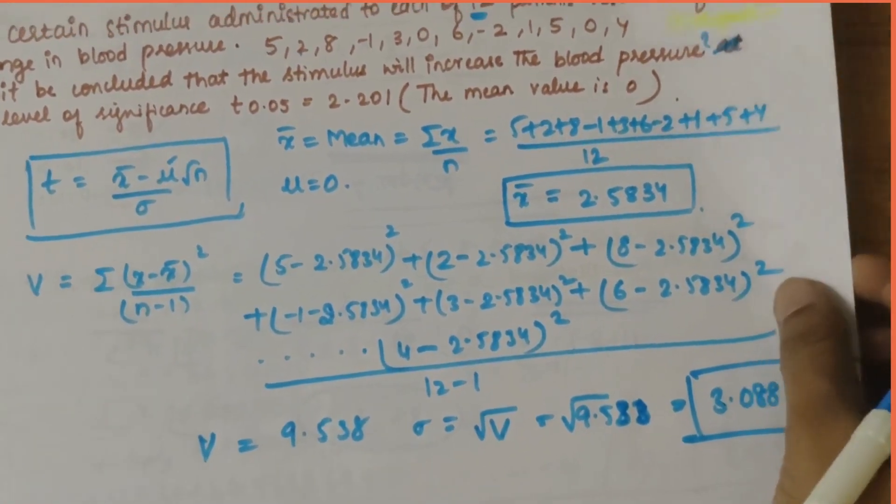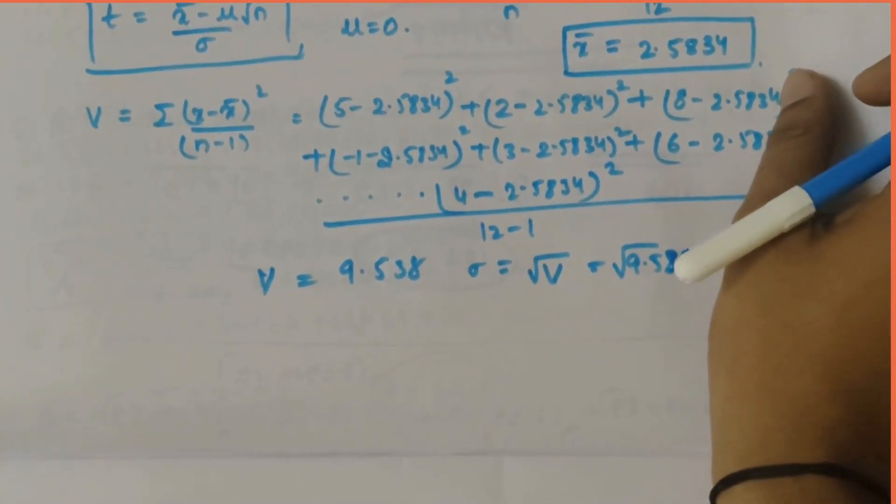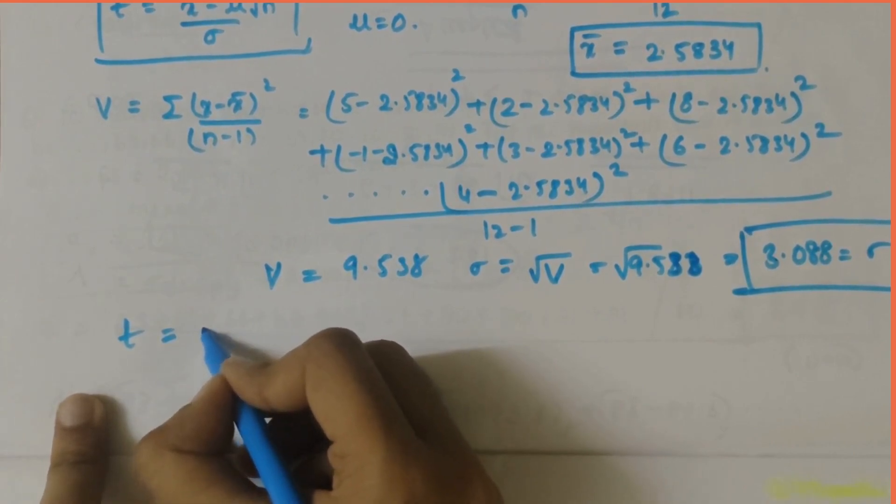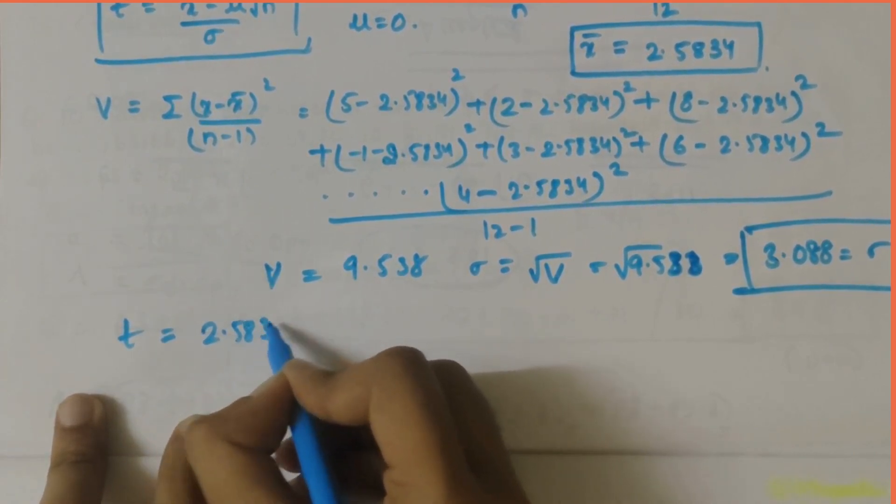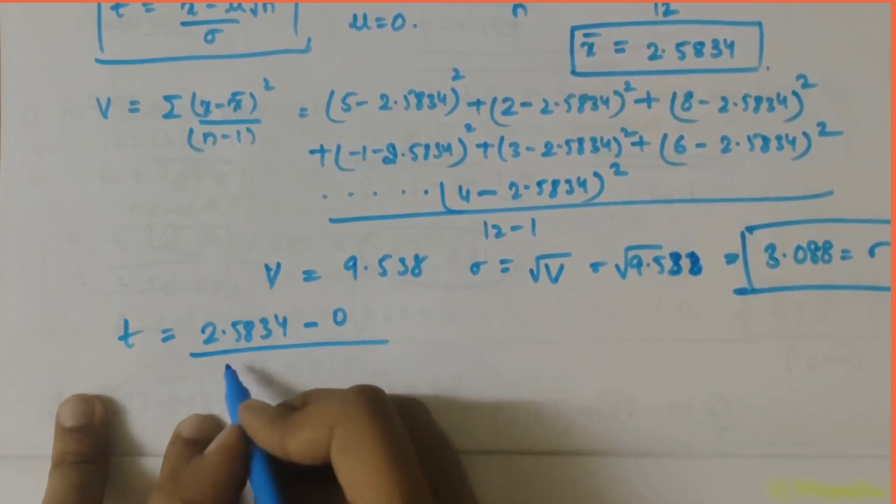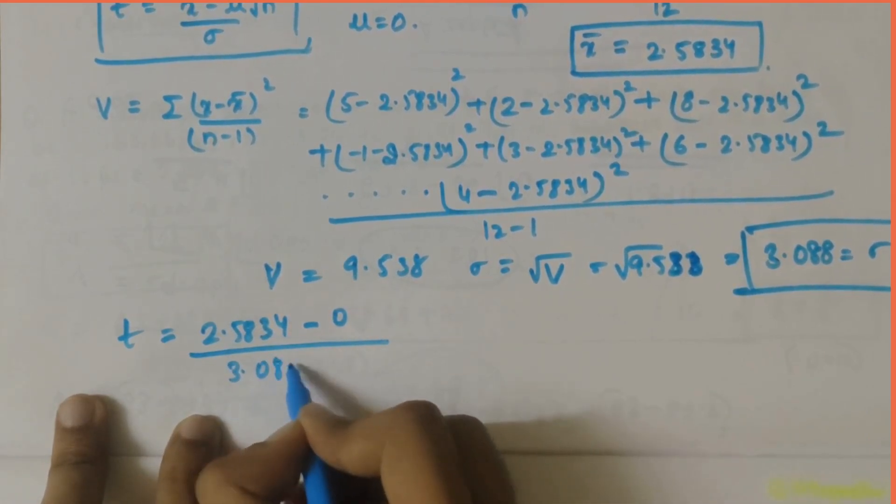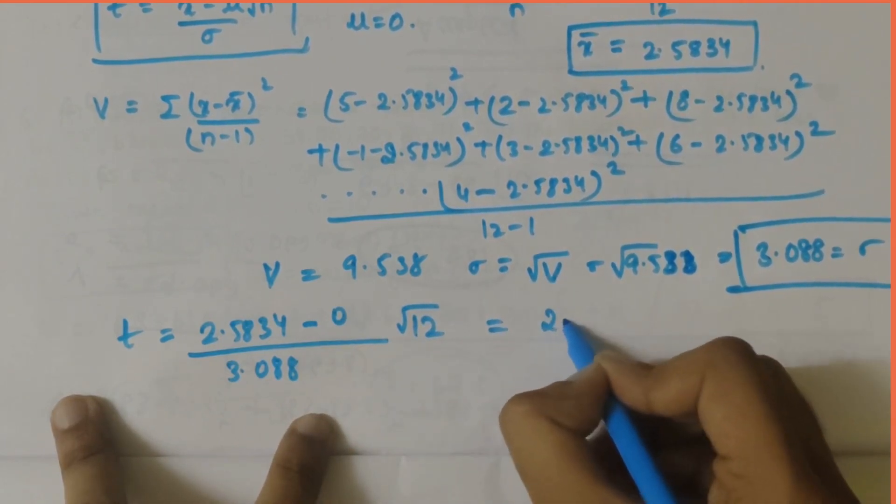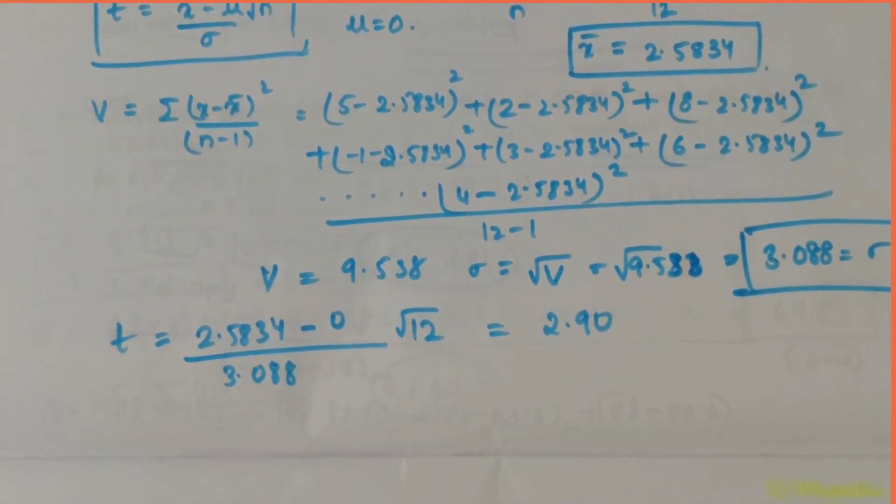Let's substitute it in this equation. So it will be t equals x bar value 2.5834 minus mu value is 0, divided by sigma value 3.088 times under root 12. If you solve this you get 2.90.